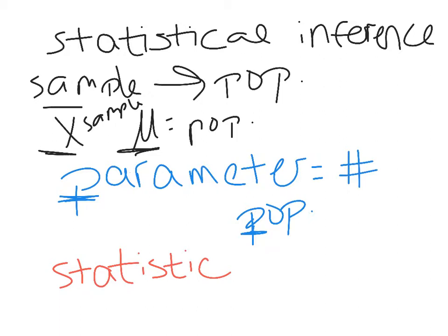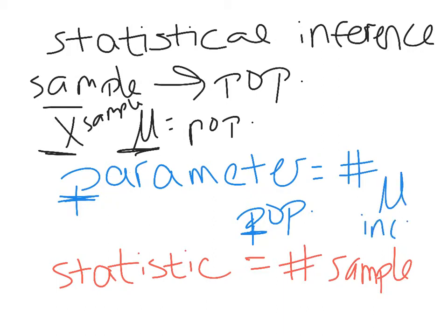A statistic is also a number, but it describes a characteristic of the particular sample. For instance, if we're surveying U.S. households and talking about income, the parameter would be the mean income of every household in the U.S., while the statistic would be the mean income of a sample — say we did a sample of 60,000 households. We can then use that statistic to help estimate our unknown parameter, which is the mean income of all households.